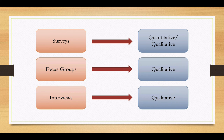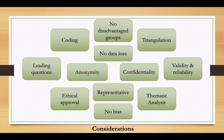Surveys, focus groups, and interviews give us quantitative and qualitative opportunities. From surveys we can get quantitative data — what percentage replied a certain way. Focus groups and interviews rely primarily on qualitative data. There are many considerations: the fear of leading questions in surveys, how data will be coded, ensuring no disadvantaged groups, no data loss, and triangulation of data. Making sure our data is valid, reliable, anonymous and confidential, that ethical approval has been sought, and that thematic analysis is done correctly without introducing any bias.